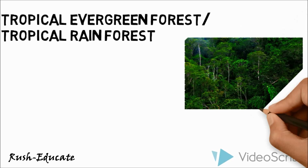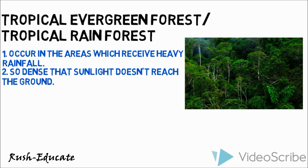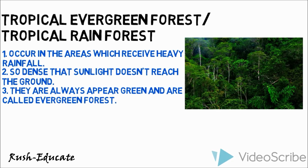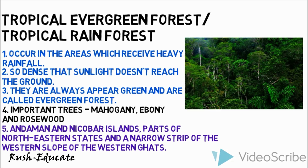Tropical rain forests occur in areas which receive heavy rainfall. They are so dense that sunlight doesn't reach the ground. Many species of trees are found in these forests, which shed their leaves at different times of the year. Therefore, they always appear green and are called evergreen forests. Important trees found in these forests are mahogany, ebony, and rosewood. Andaman and Nicobar Islands, parts of northeastern states, and a narrow strip of the western slope of the Western Ghats are home to these forests.